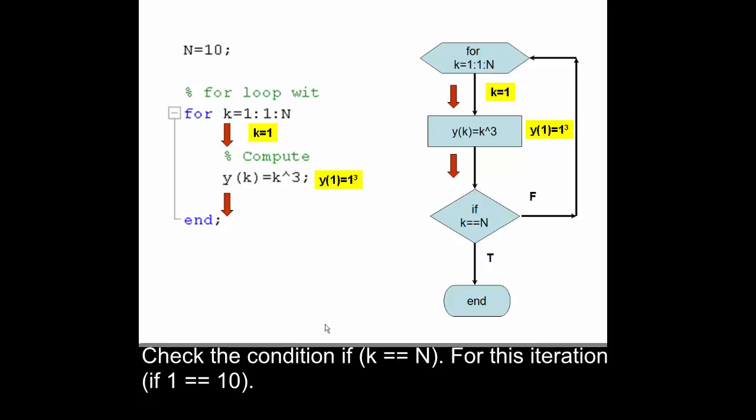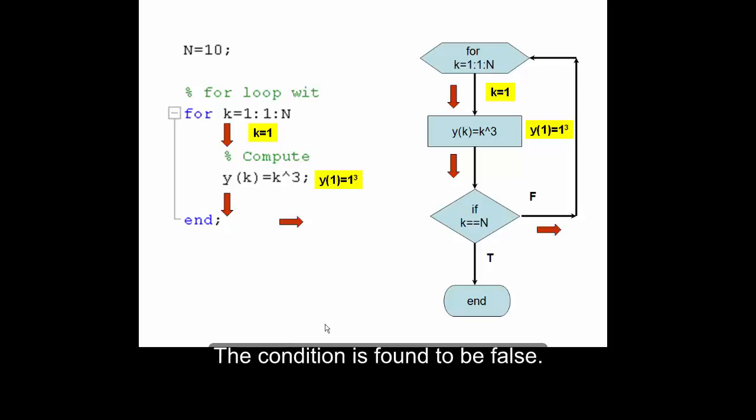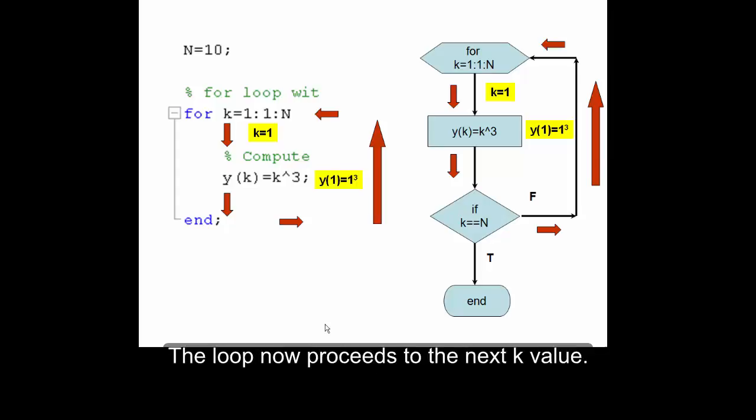Check the condition if k equals n. For this iteration, if 1 equals 10, the condition is found to be false. Return to the beginning of the loop. The loop now proceeds to the next k value.